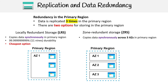For ZRS, we have copies of data replicated synchronously to three different availability zones in the primary region, and this has a durability of 12 nines, so it's clearly more durable. Why would you want to choose ZRS over LRS? If an availability zone goes out, you still have your data in the other zones — whereas with LRS, if the availability zone goes out, your data is gone. That is the first tier.